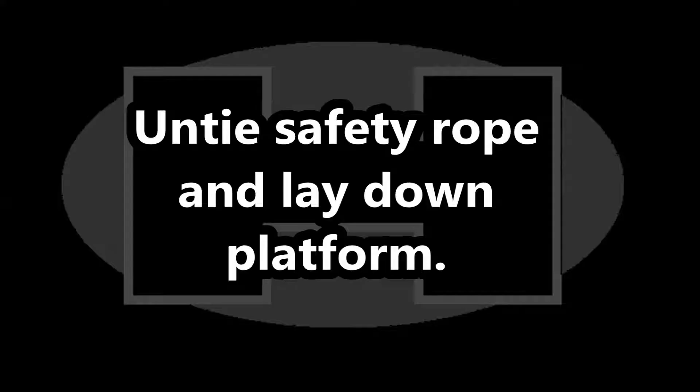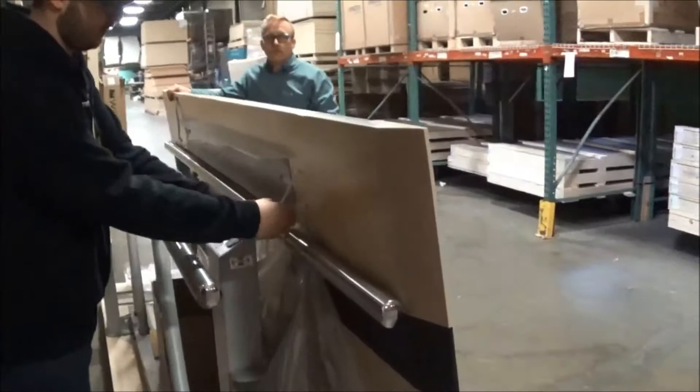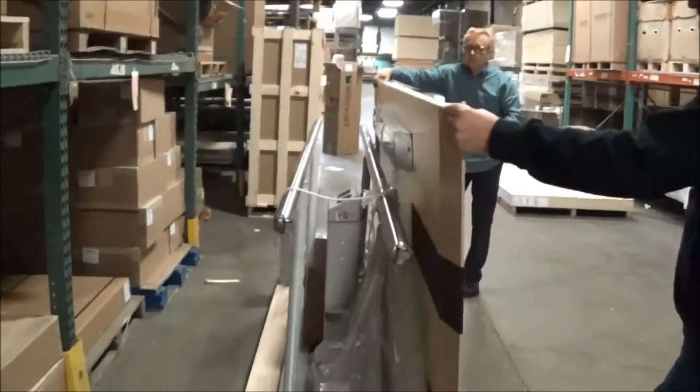With assistance to hold the platform, remove and discard the safety rope that prevents the platform from falling over. Then, carefully lift the platform off the skid and lay it down on the floor.